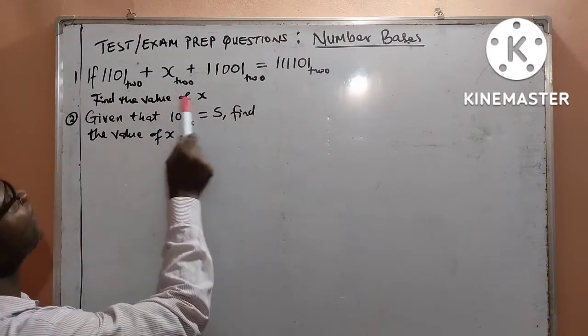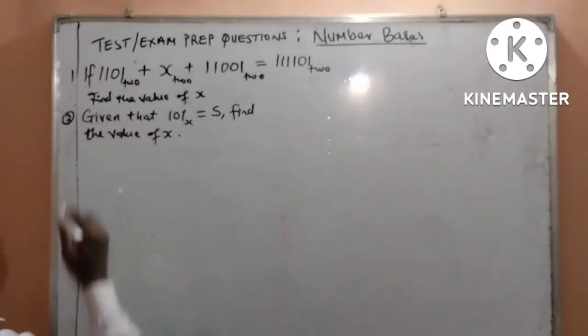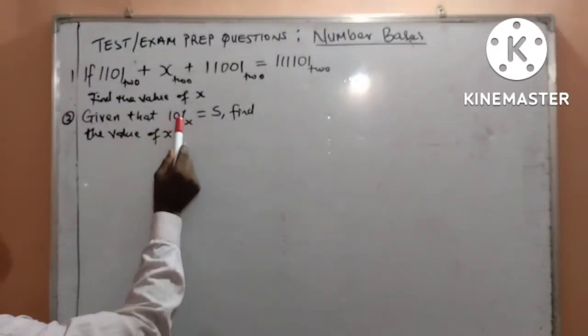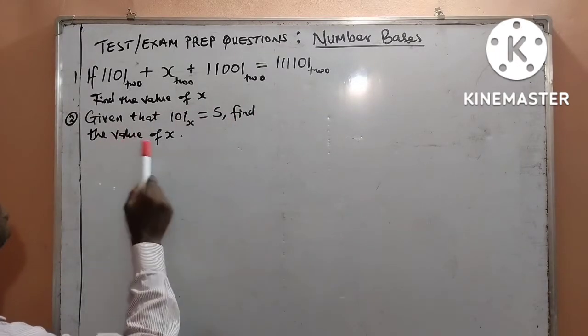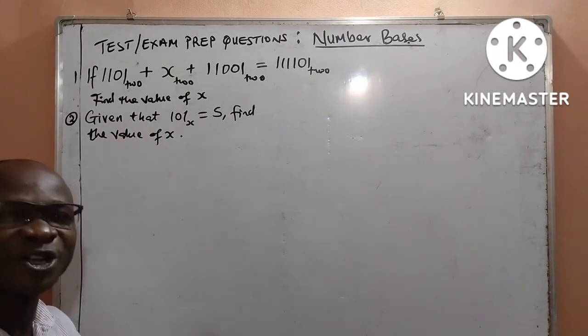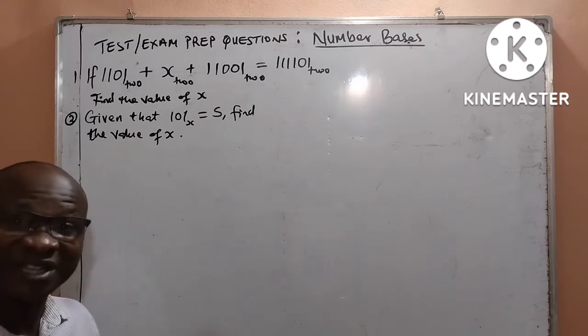And in question 2, we are given that 101 base x is equal to 5. But we should also find the value of x. Let us solve it together. I want you to watch to the end. It is not going to take your time.